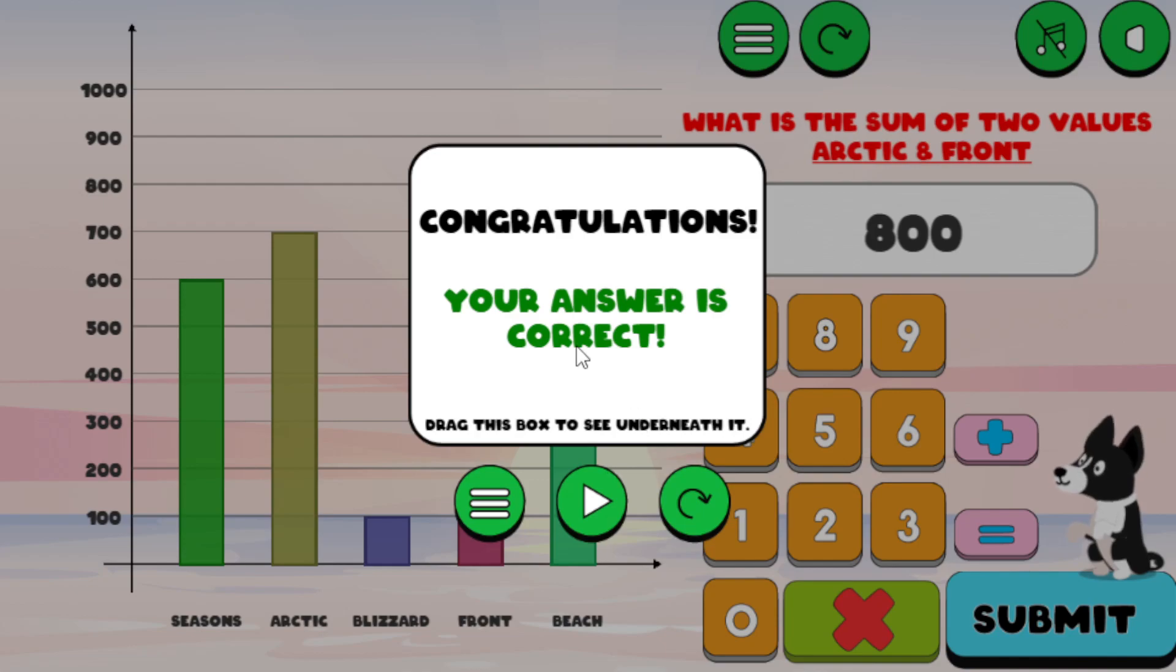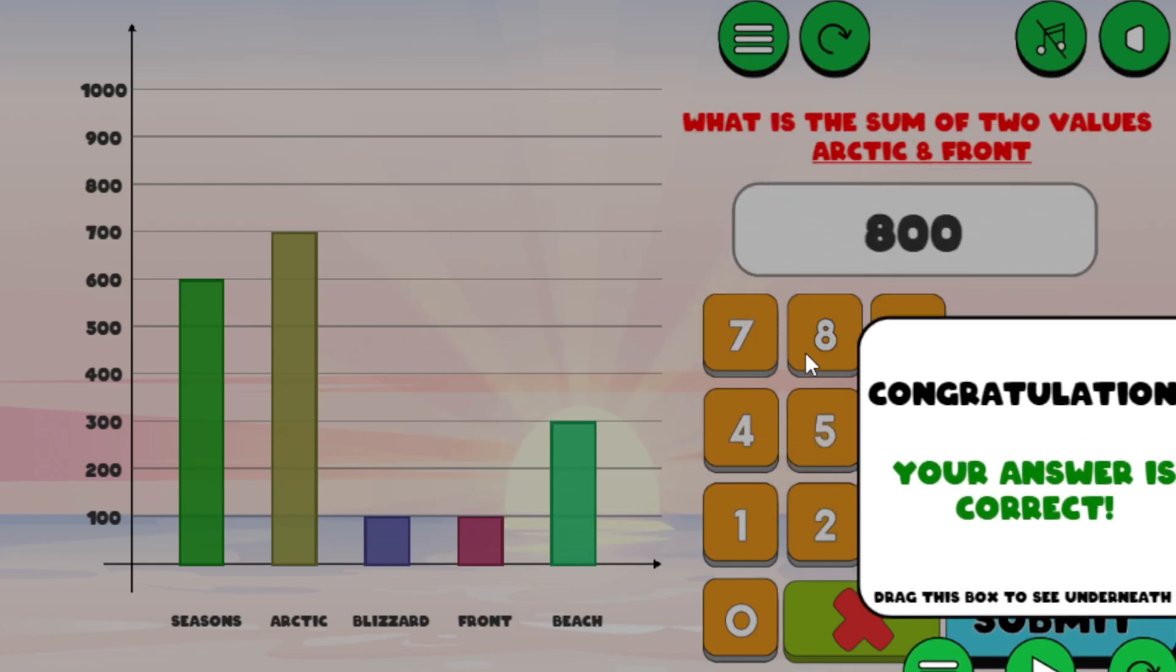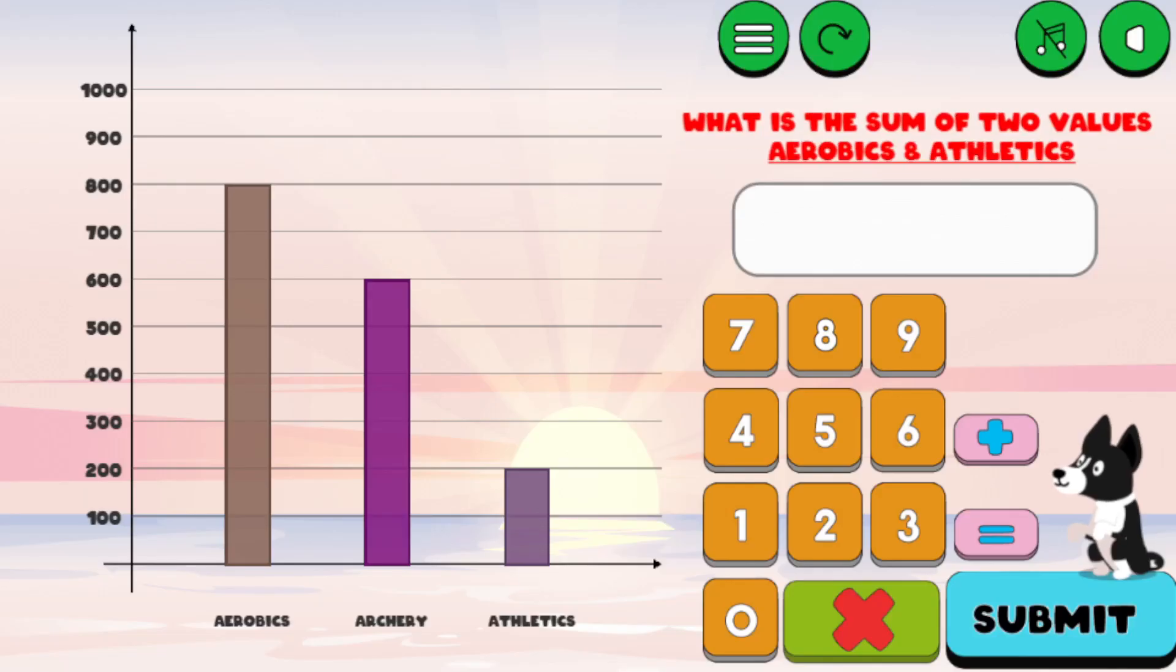And it says, congratulations, your answer is correct. But it also says, drag this box to see underneath it. So if you get the answer correct or incorrect, you can always look at the problem, see what your answer is, and see what the problem is, and see the graph. So let's go ahead and go next.